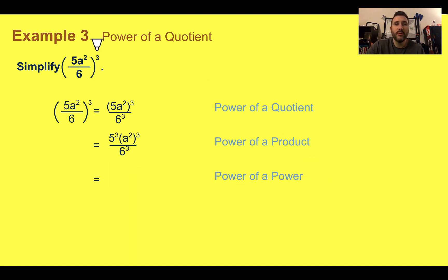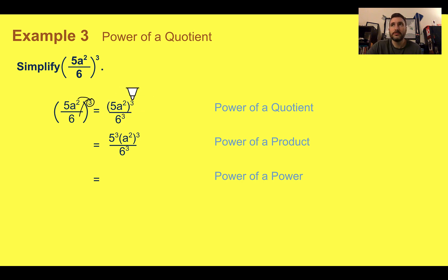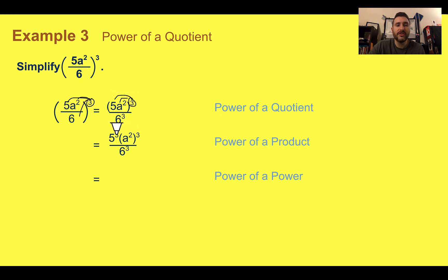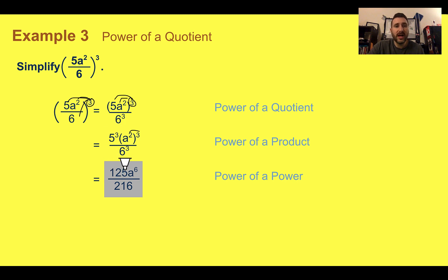Example 3, power of a quotient. Simplify 5a squared divided by 6, all to the 3rd power. We're going to take this 3 outside and distribute it to both the top and the bottom. We'd end up with 5a squared to the 3rd power on top, and 6 to the 3rd on the bottom. Then, using power to a product, we distribute that 3 again. 5 to the 3rd is 125, and a to the 2nd to the 3rd power gives a to the 6th. 6 to the 3rd power is 216. So our final answer is 125a to the 6th, all over 216.